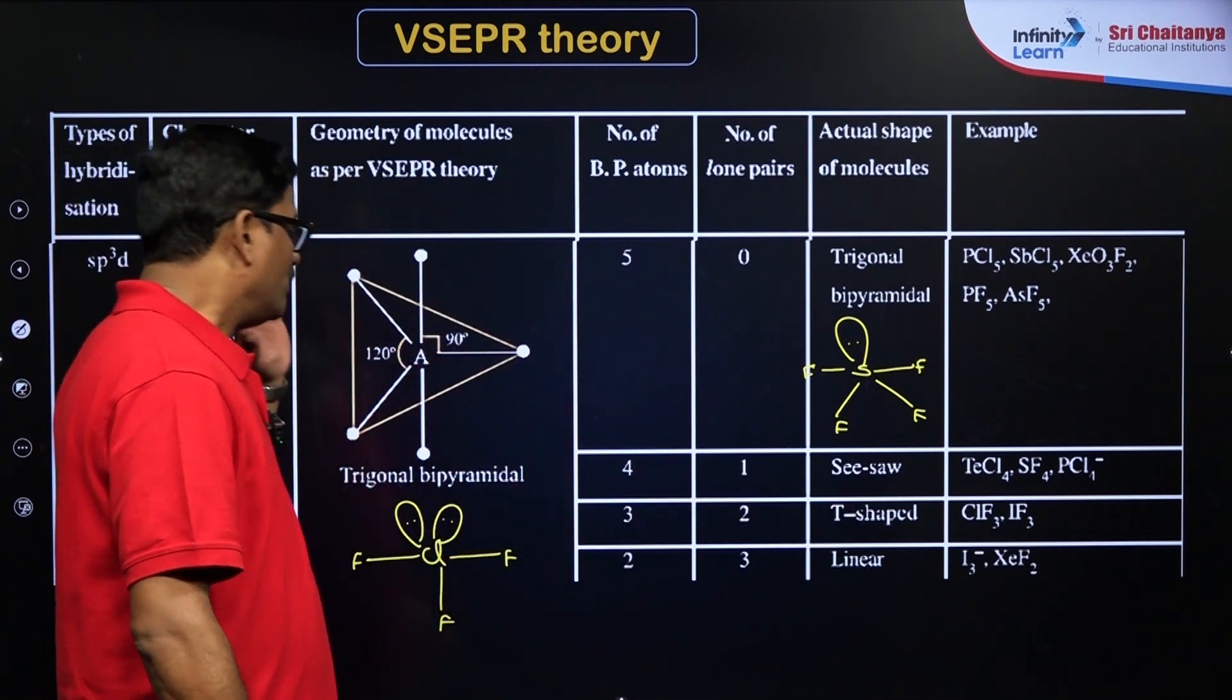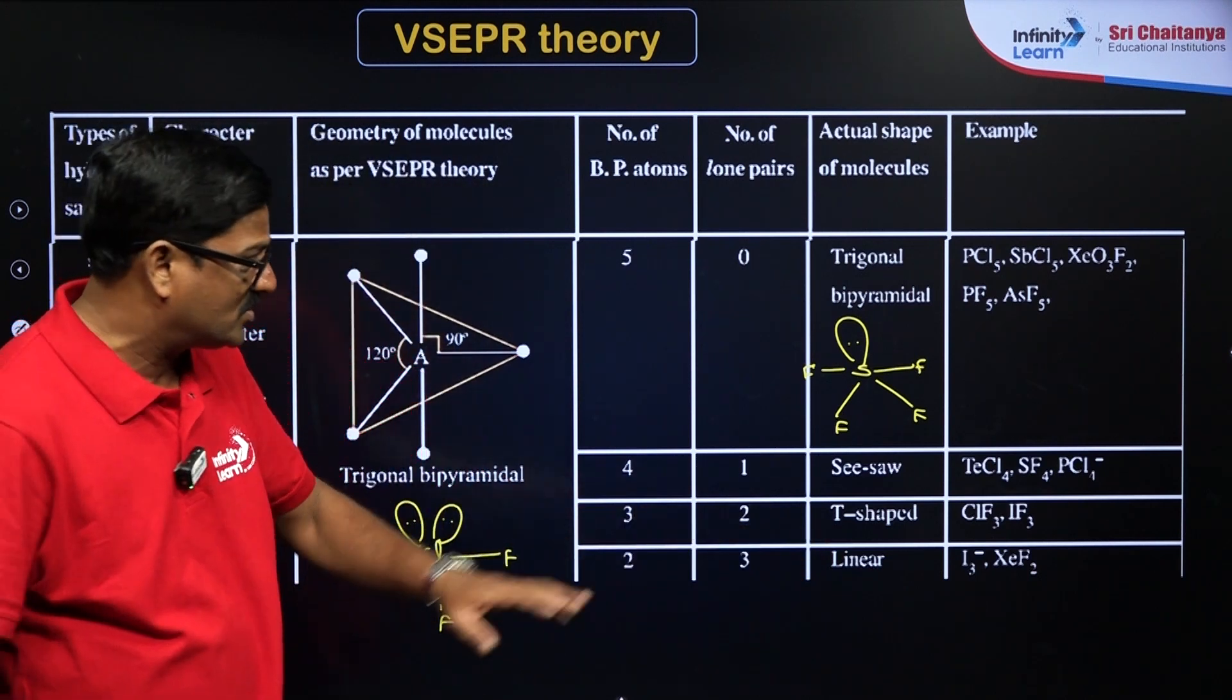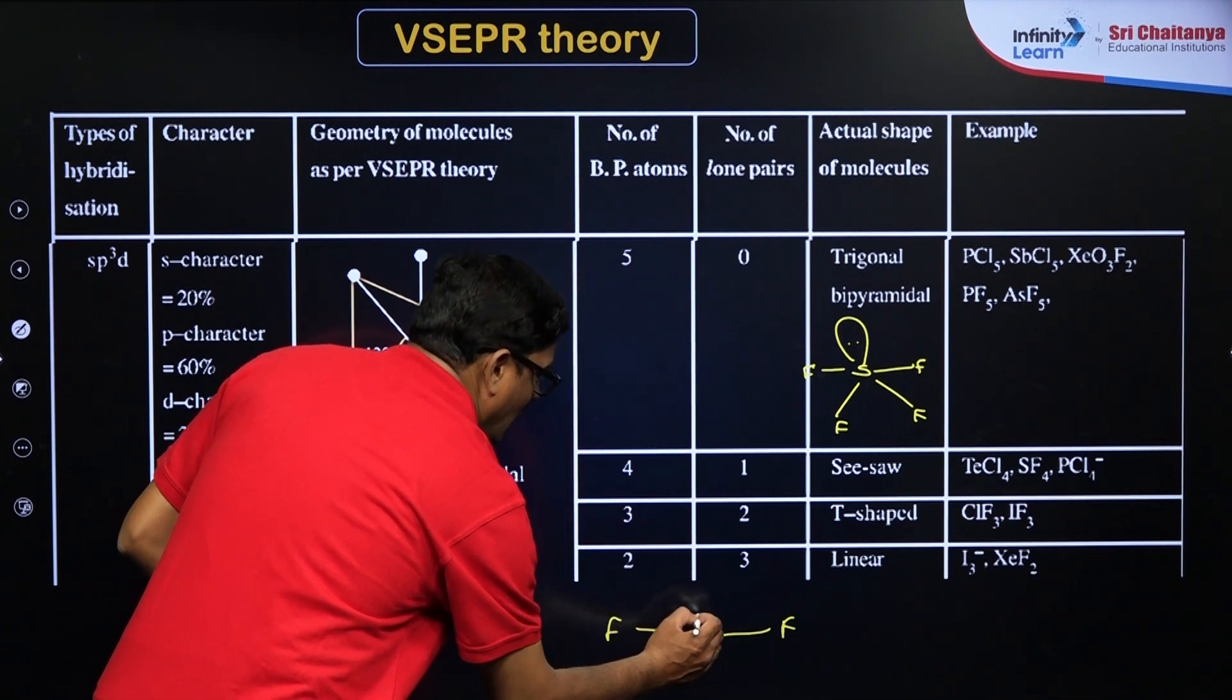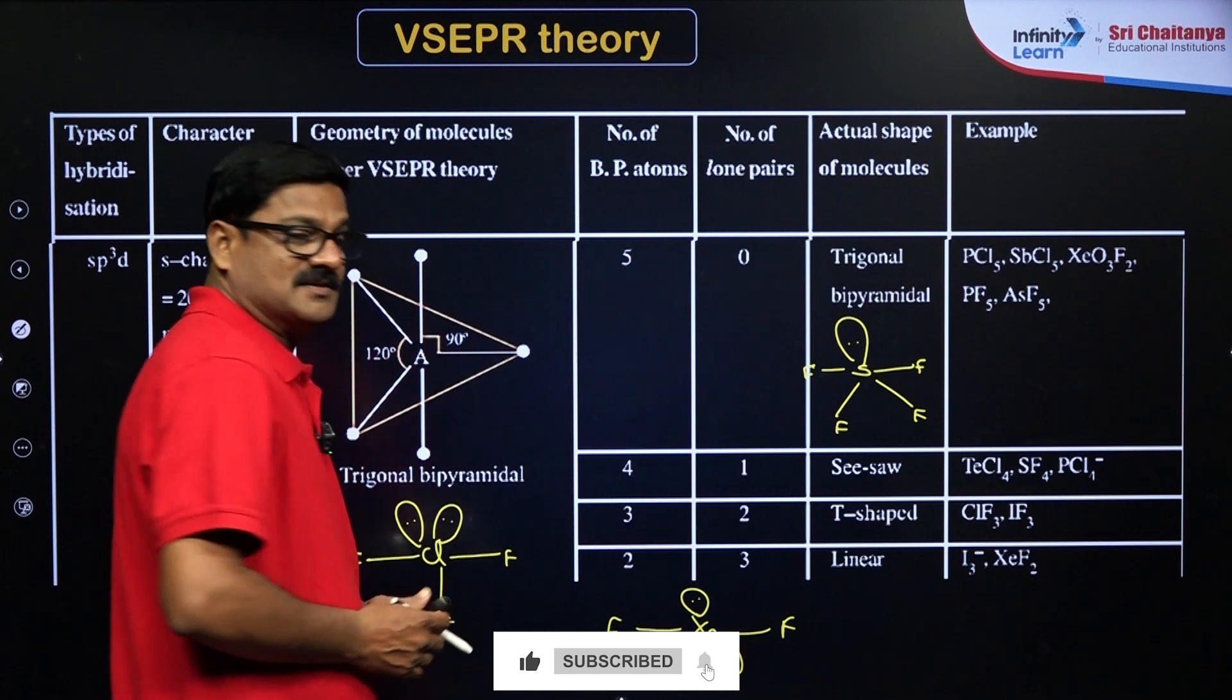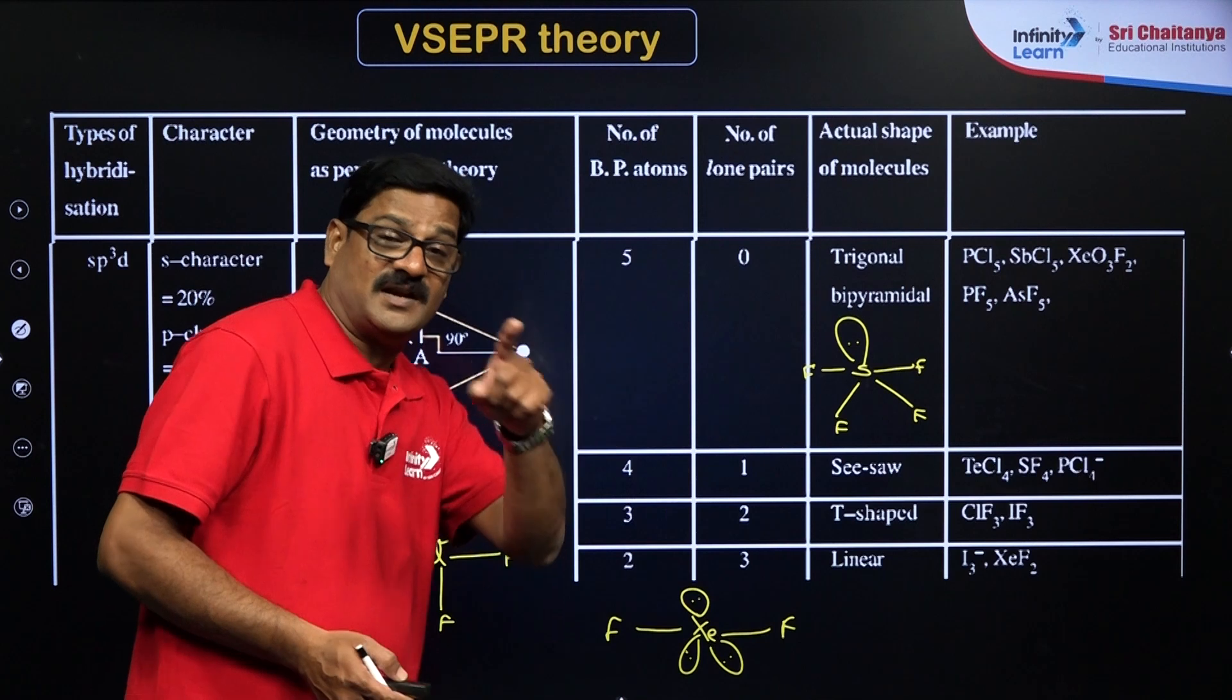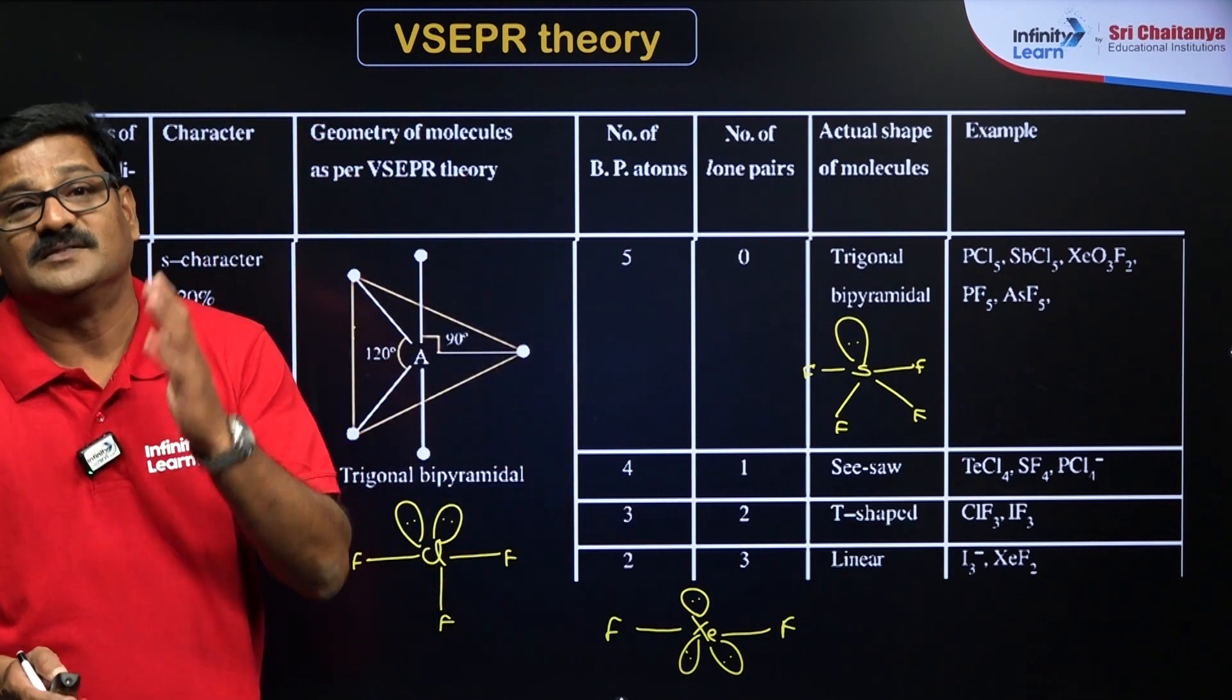And also you are going to have two bond pairs and three lone pairs. It is going to be linear. The best example is going to be XeF2, xenon difluoride. And you are going to see three lone pairs of electrons like this. So the electron geometry is trigonal bipyramidal, but the bond pairs decide the shape. The total number of electrons decides the geometry.